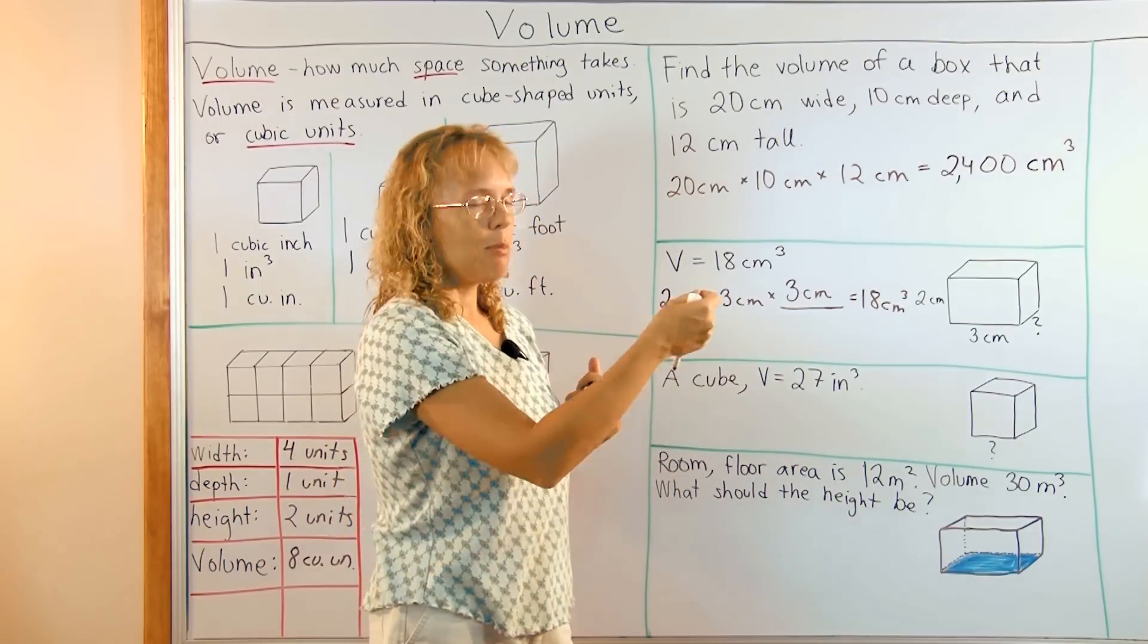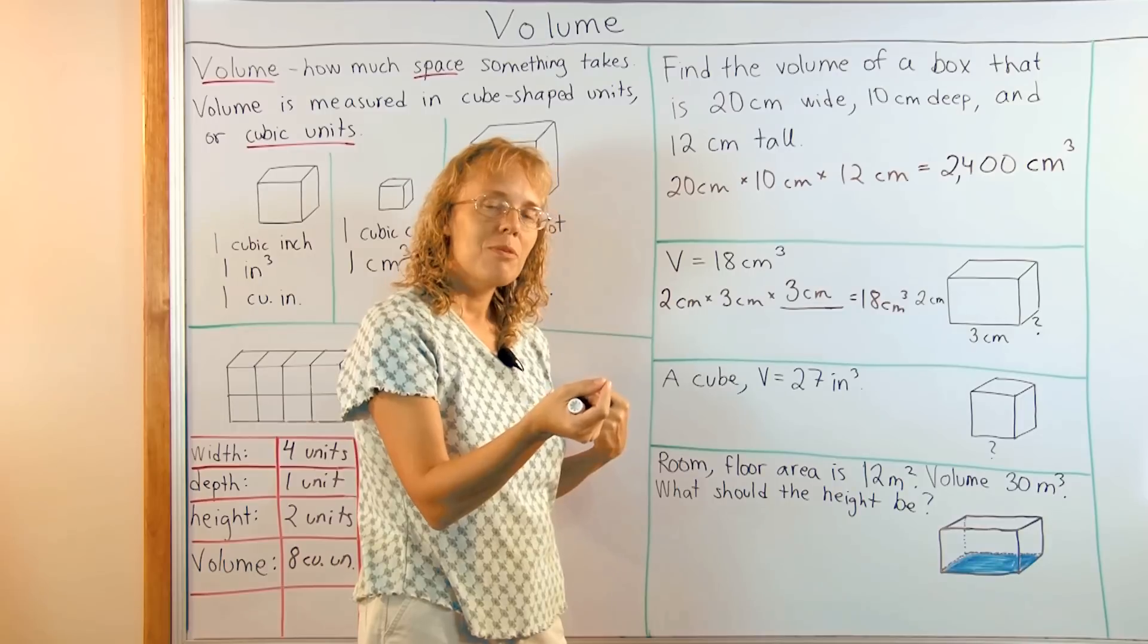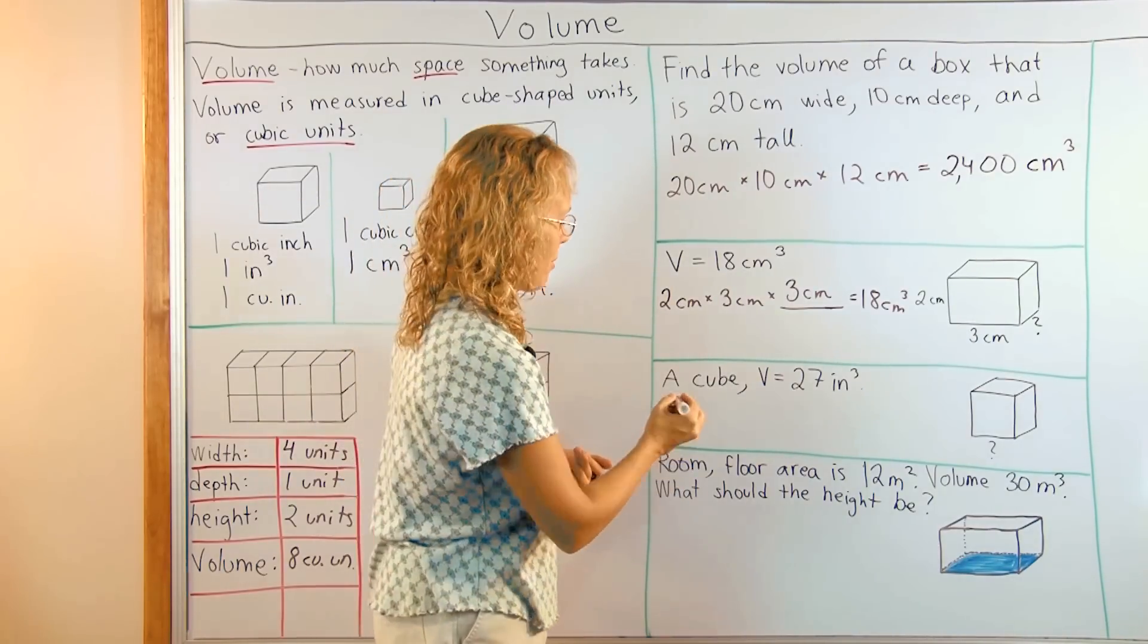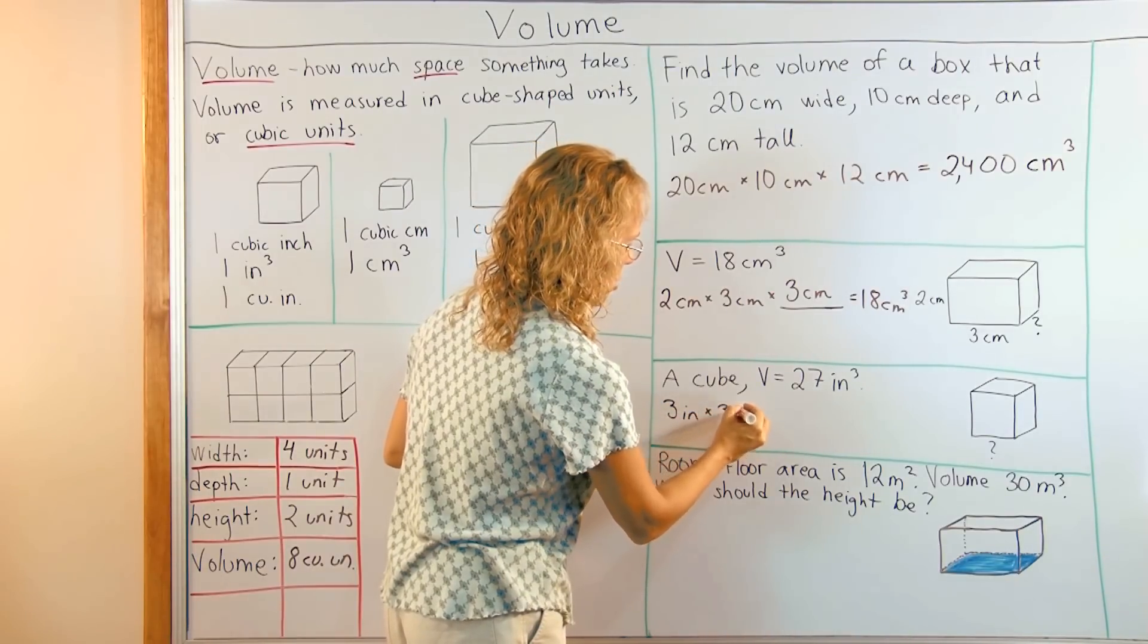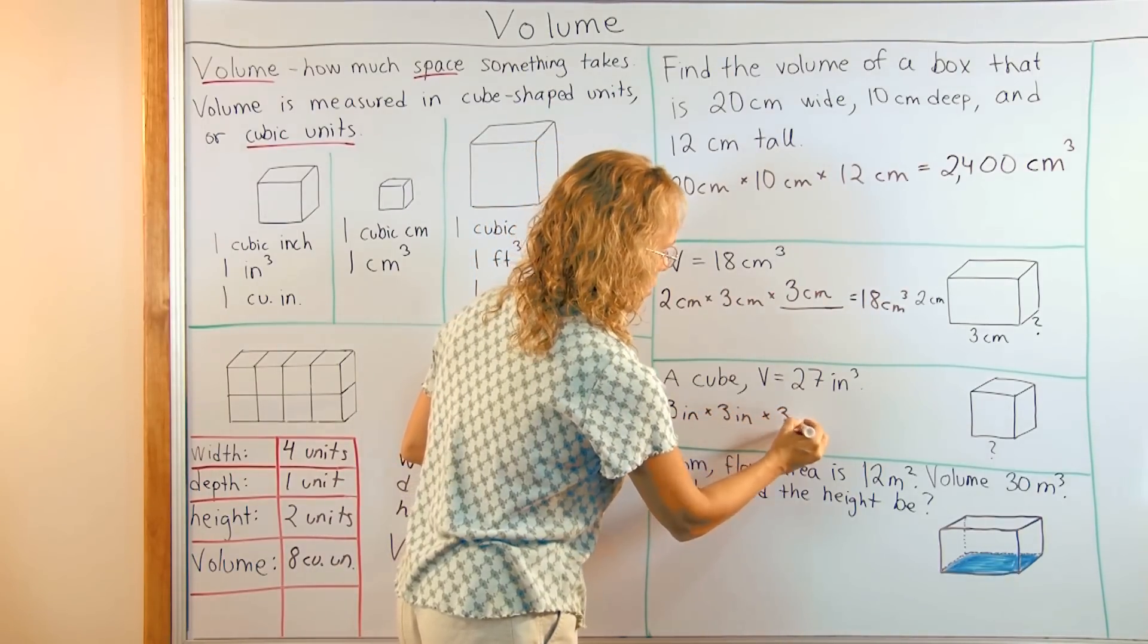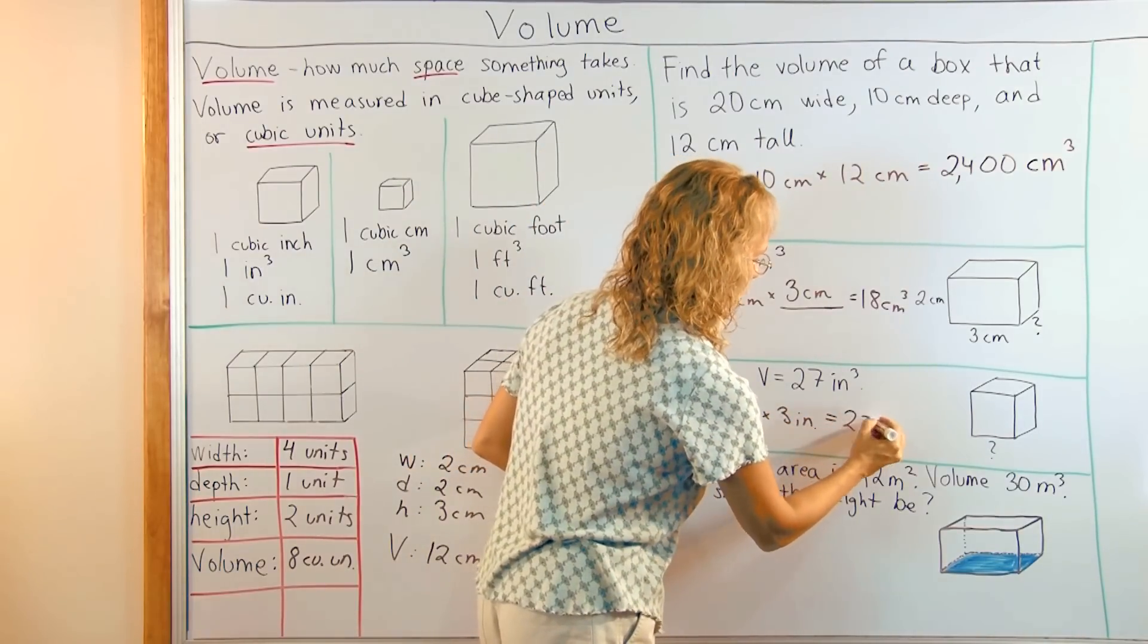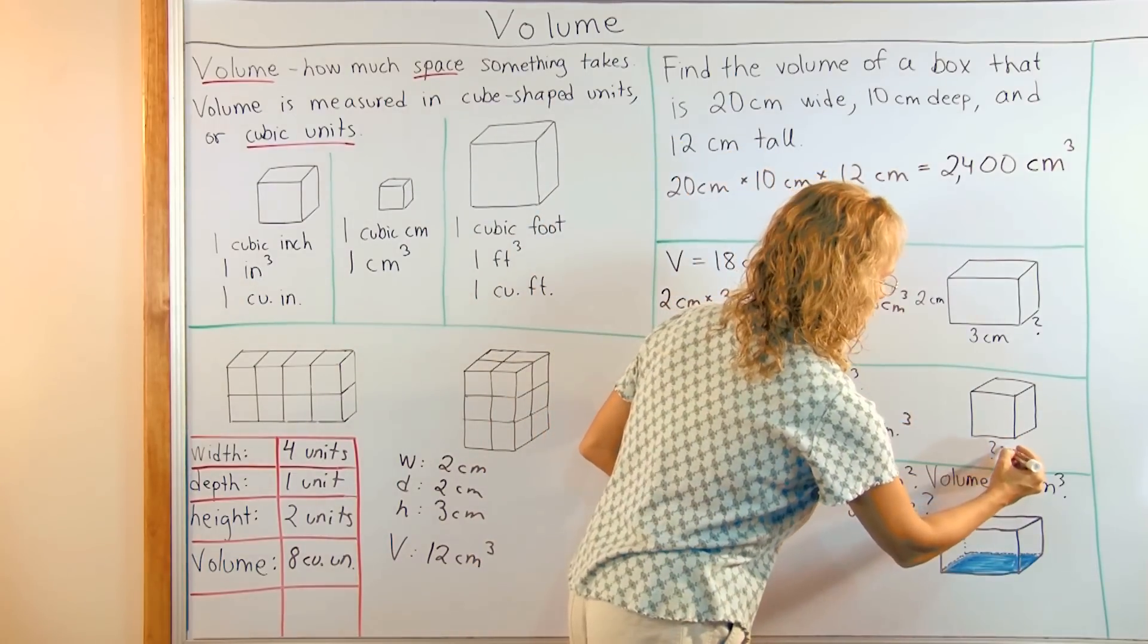Okay? You know, one times one times one won't work, right? Two times two times two won't work either. But three times three times three will work. We will get three inches times three inches times three inches equals twenty-seven cubic inches. So this here is three inches.